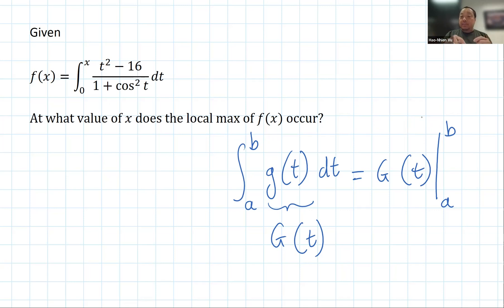And what you do is you plug in the b, you get G of b, and you plug in the a, you get G of a, and you subtract them. What you should notice here is that after you plug in the b and the a, there's no more t in the answer. So the integral is with respect to t, the anti-derivative has t, but after you plug in the limits of the definite integral, the t is gone.